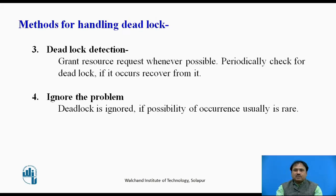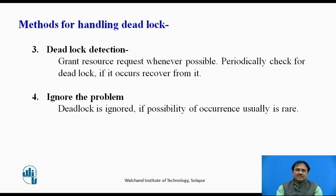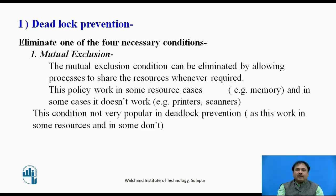In deadlock detection, whenever a process requests a resource the system allocates it, but the operating system regularly checks for deadlock. If a deadlock is found, it takes back the resources allocated to that process. Finally, there is the policy of ignoring the problem — in some systems where deadlock is quite rare, we simply ignore the deadlock condition.